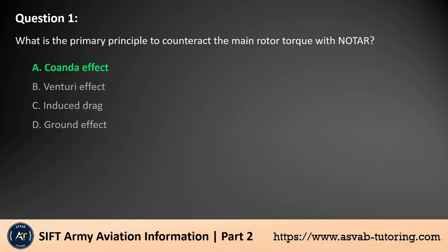The answer is A. The NOTAR (NO tail rotor) system counteracts main rotor torque by using the Coanda effect. Air is expelled from slots along the tail boom, creating a low-pressure area that helps control yaw. This eliminates the need for a traditional tail rotor. The other options — Venturi effect, induced drag, and ground effect — are unrelated to this mechanism.